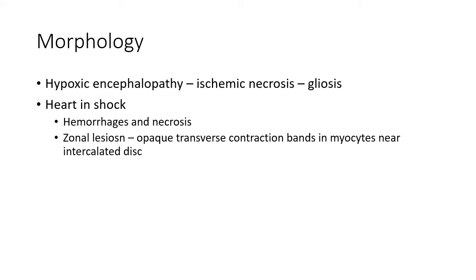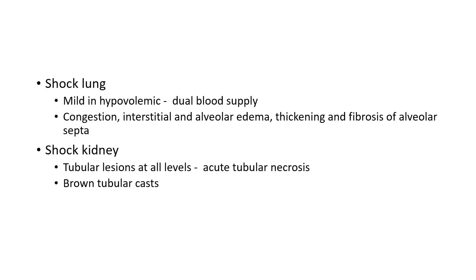Coming to morphologic features of organs in shock: in the brain, the condition is called hypoxic encephalopathy, affecting areas supplied by the most distal branches of cerebral arteries — usually the border zone between anterior and middle cerebral arteries. Microscopically, ischemic necrosis is seen, with dead and dying neurons replaced later by gliosis. In the heart, small and large areas of hemorrhage and necrosis are seen, along with zonal lesions — opaque transverse contraction bands in myocytes near the intercalated disc.